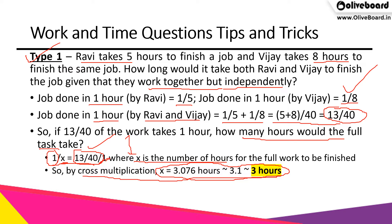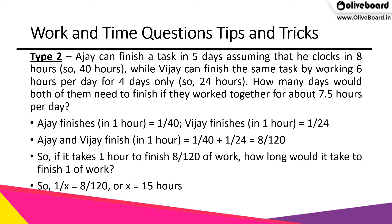This is the simplest kind of question. It may or may not appear, but it is a foundation-level question in time and work. We included it because we must understand the basics before moving to intermediate and advanced parts. The type 2 question: Ajay can finish a task in five days assuming he works eight hours per day — that is 40 hours total — while Vijay can finish the same task working six hours per day for four days, totalling 24 hours.